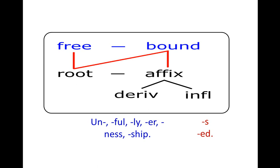Examples of derivation: 'unhappy,' 'happiness.' For inflection, it is like conjugations in verbs. In the simple present tense, third person singular, we use the letter 's' for 'he,' 'she,' or 'it.' For example, the verb 'work': I work, you work, but he/she/it 'works' — we add the 's.' This is inflection — a variation in the standard conjugation.